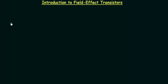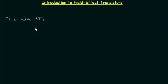Hi everyone. In this video we are going to see an introduction to field effect transistors, shortly known as FET. FET is one type of transistor which comes under the classification of UJTs. We are also going to see the differences between FETs and BJTs, where BJTs are bipolar junction transistors, and how we differentiate the symbols of FET and BJT.